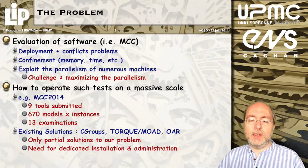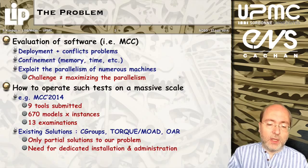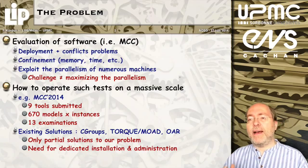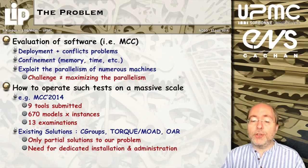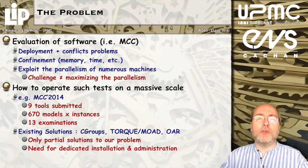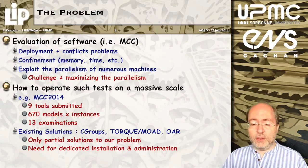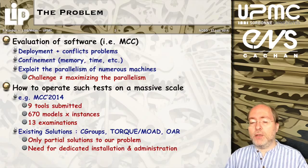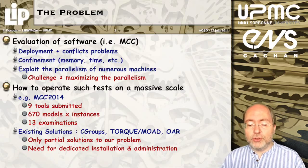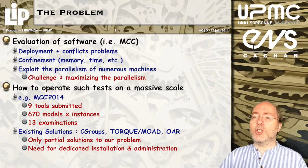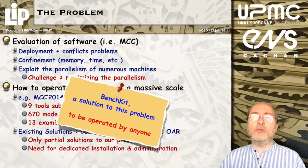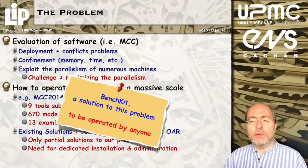A typical use case is the model checking contest, where you have several tools, several models, and examinations that are executed to evaluate several tools. So you have a large number of executions. To operate these, there are current solutions — for example, C-groups are useful for containment. But these are only partial solutions, and usually they require dedicated installation and administration. Our goal with BenchKit is to find a solution that could be operated by anyone as soon as some virtualization mechanisms have been installed.